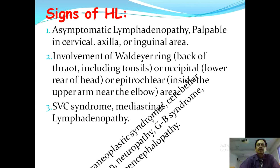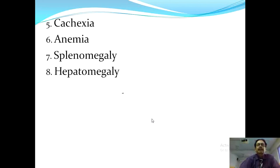The patient may have cachexia — wasting of muscles, weakness, fatigue, malaise, and emaciation. Suspicion of Hodgkin's lymphoma should be high in an emaciated patient. The patient may also simply present with anemia, hepatosplenomegaly, and jaundice, and you should consider Hodgkin's lymphoma as a possibility, though other differential diagnoses must also be considered.